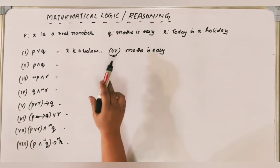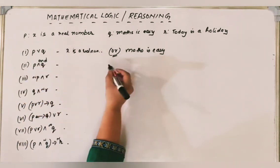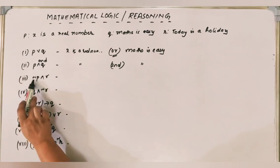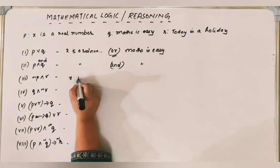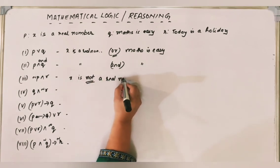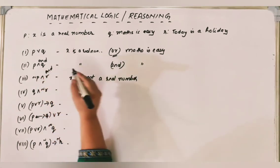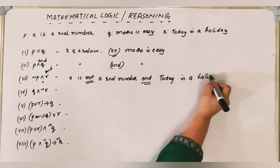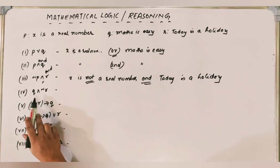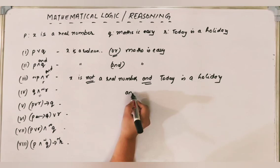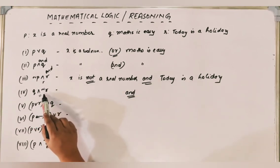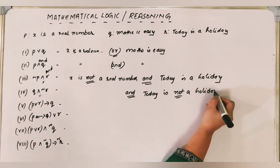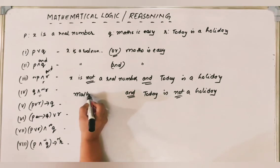For P AND R: 'X is a real number AND today is a holiday'. For NOT P AND R: 'X is NOT a real number AND today is a holiday'. For Q AND NOT R: 'maths is easy AND today is NOT a holiday' — it's negative R, so R is negated.